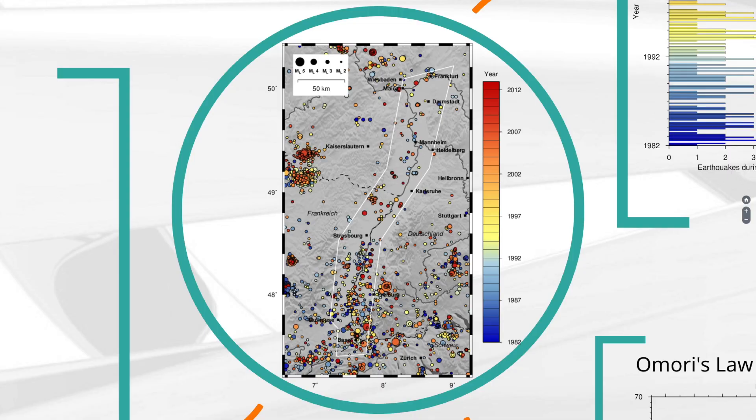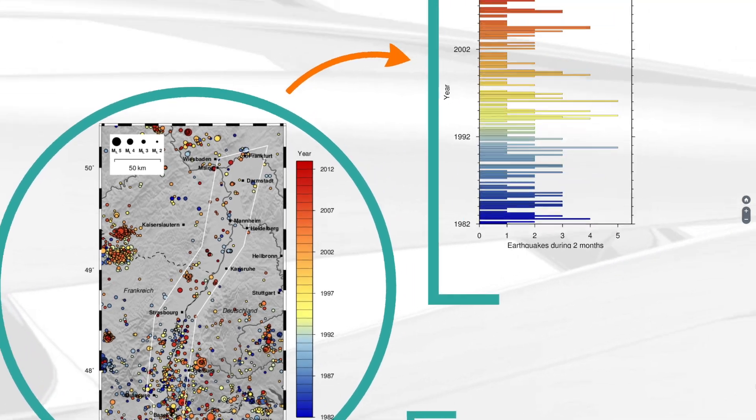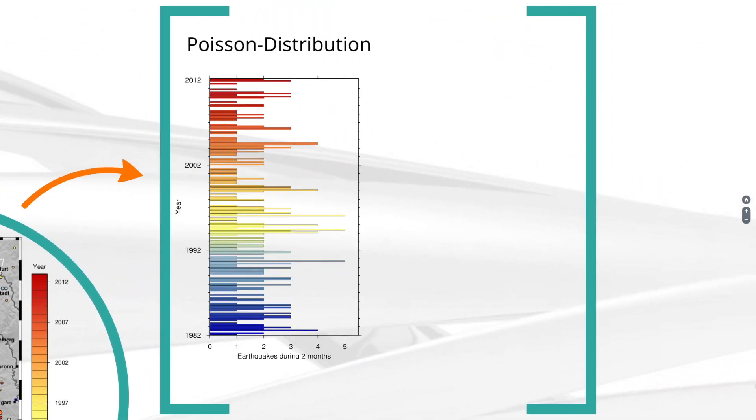To do so, I will now transfer the earthquakes from the Upper Rheingraben from the map we saw earlier to a diagram, and at the same time limit myself to quakes with a magnitude greater than 2. We will also ignore foreshocks and aftershocks. The diagram now shows how many main shocks occurred in each 2-month time window. Once again, it appears that the occurrence over time is random.